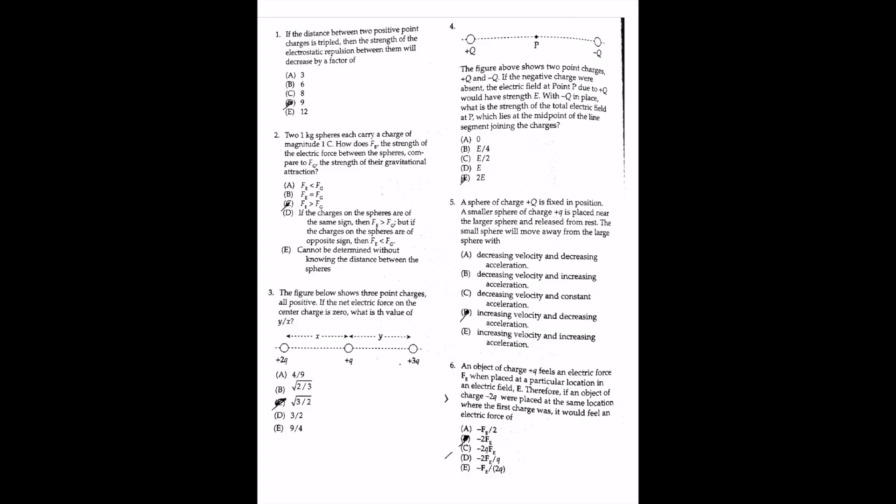This video is practice questions for the AP Physics exam for the topic of electric forces and fields. It can also be used for practice for the IB or GCSE exam. For the first question, if the distance between two positive point charges is tripled, then the strength of the electrostatic repulsion between them will decrease by a factor of 9 — answer D — and we can find this from Coulomb's law.